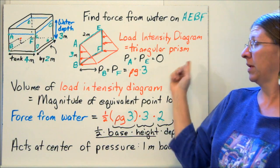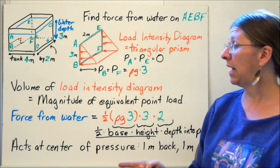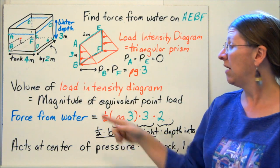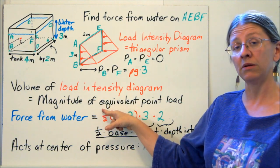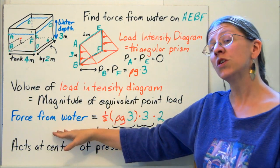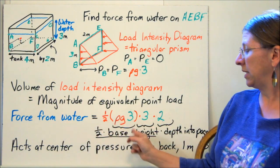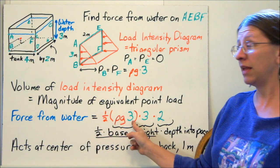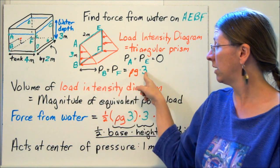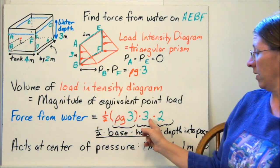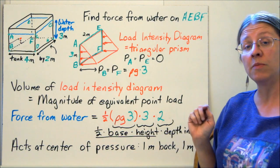That's a triangular prism. So the volume of my load intensity diagram is going to be the area of the triangle times the depth end of the page. That's the magnitude of the equivalent point load. So the force from the water is 1 half, base times height, ρg3. That's the base here, ρg3. Times the height, that's 3.